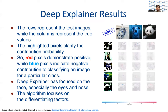These are the results based on the Deep Explainer. The rows represent the test images, while the columns represent the true values. Red pixels demonstrate positive SHAP values — in other words, the pixels that contributed to classifying an image. Blue pixels demonstrate negative SHAP values, that is pixels not classifying an image to a particular class. The outcome based on the test images is that the Deep Explainer has focused on the face, especially the eyes and nose, when differentiating these three animals. For example, the algorithm highlighted the pixels of the animal's eyes and nose as red whenever the model predicted the true value. Blue pixels were highlighted whenever the model didn't classify a panda as a cat or dog.